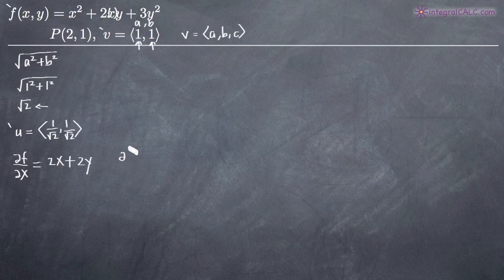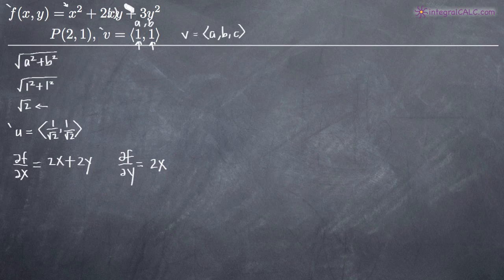Now let's find the partial derivative of f with respect to y. We treat y as the variable and hold x constant. The derivative of x² with respect to y is 0, since there's no y variable in that term. The derivative of 2xy with respect to y is 2x, because the derivative of y is 1, leaving us with 2x. The derivative of 3y² is 6y. So we have our two partial derivatives: ∂f/∂x = 2x + 2y and ∂f/∂y = 2x + 6y.